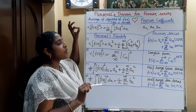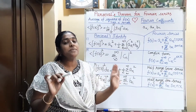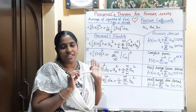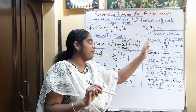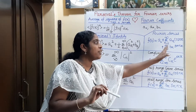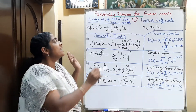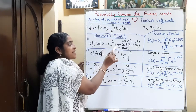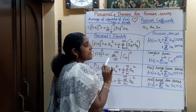This average of the square of the function relates beautifully to the Fourier coefficients. If we write the Fourier series in general form as f(x) = a₀ + Σ(n=1 to ∞) aₙ cos(nx) + Σ(n=1 to ∞) bₙ sin(nx), then Parseval's identity states that the average of the square of this function equals a₀² + (1/2) Σ(n=1 to ∞) (aₙ² + bₙ²).